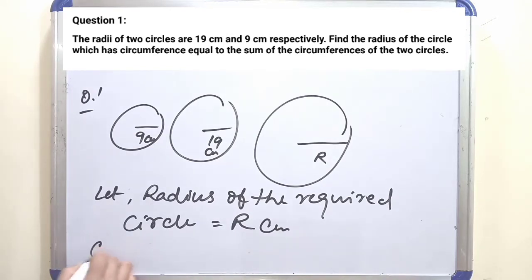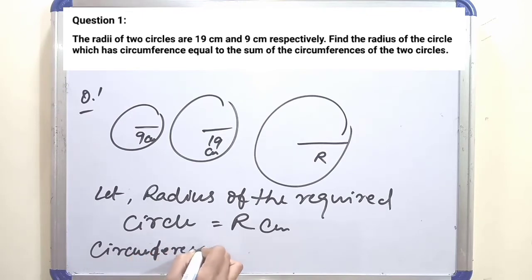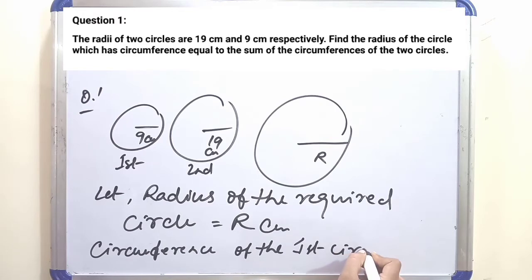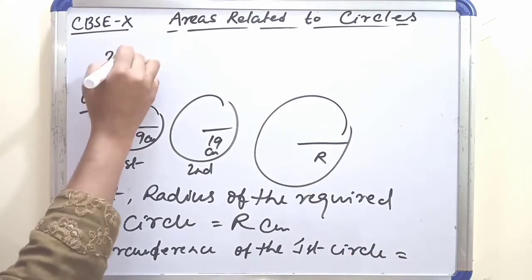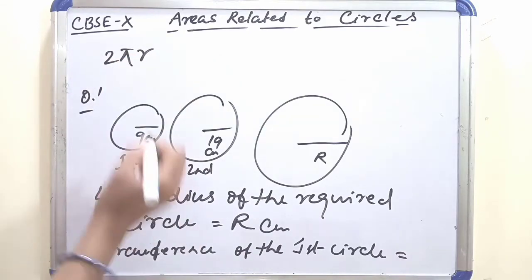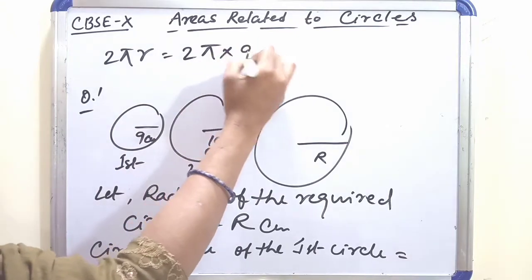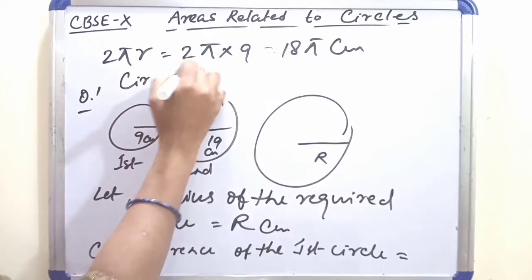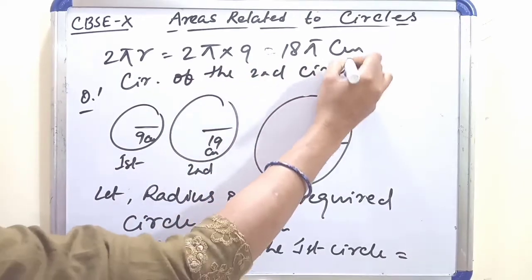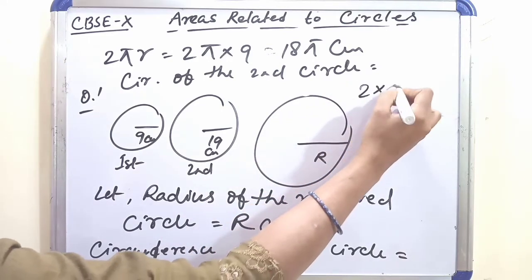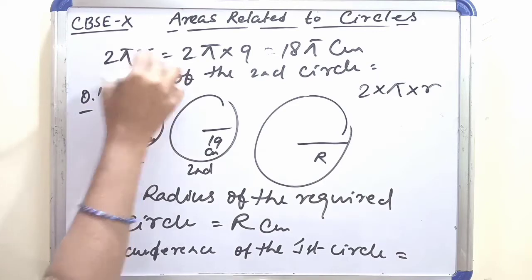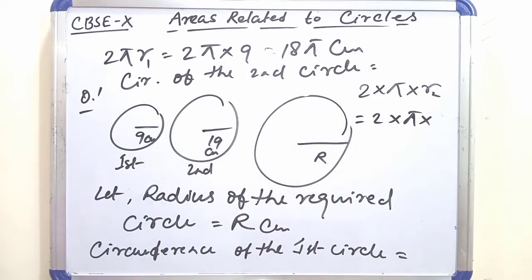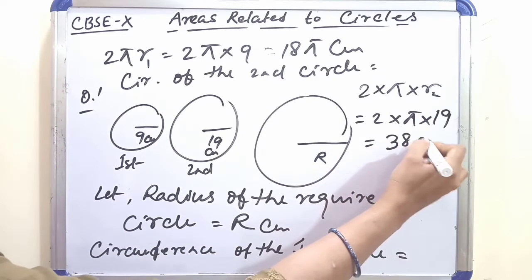Circumference of the first circle = 2πr₁ = 2π × 9 = 18π centimeters. Circumference of the second circle = 2πr₂ = 2π × 19 = 38π centimeters.